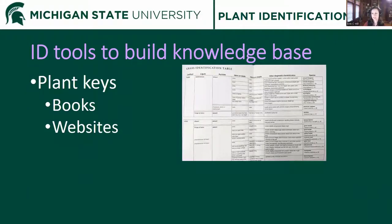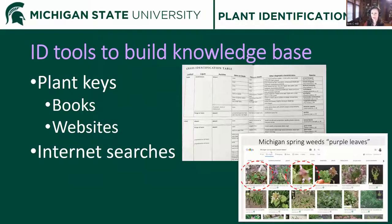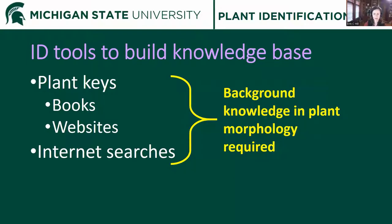Traditionally, we use plant keys found in identification books or on websites. These keys give you opposing choices to work through, and it can be daunting — especially when there are no pictures. We can also use internet searches like a Google image search, which requires a detailed description of the plant, and then you look at results to see if they match what you're seeing in the field. The problem is that these tactics require some background knowledge in plant morphology.